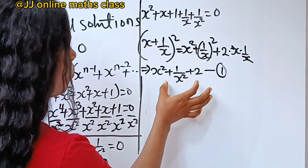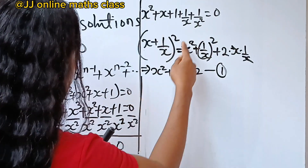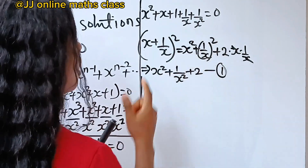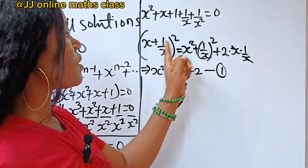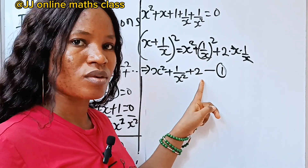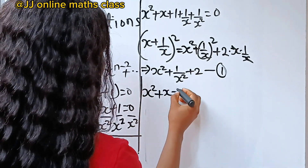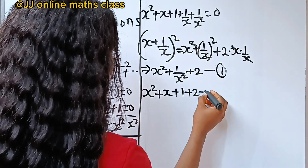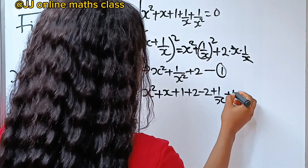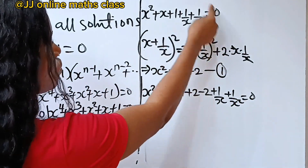We already have x squared, 1 over x, and 1 over x squared in our expression. The only thing we need to introduce to complete the pattern is just a 2. We can introduce it by writing 2 minus 2, which equals 0, so we haven't changed anything. So: x squared plus x plus 1 plus 2 minus 2 plus 1 over x plus 1 over x squared equals 0.